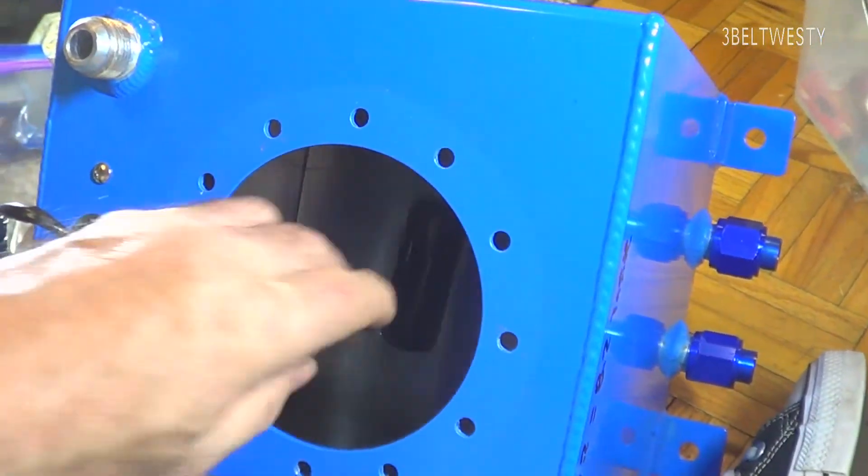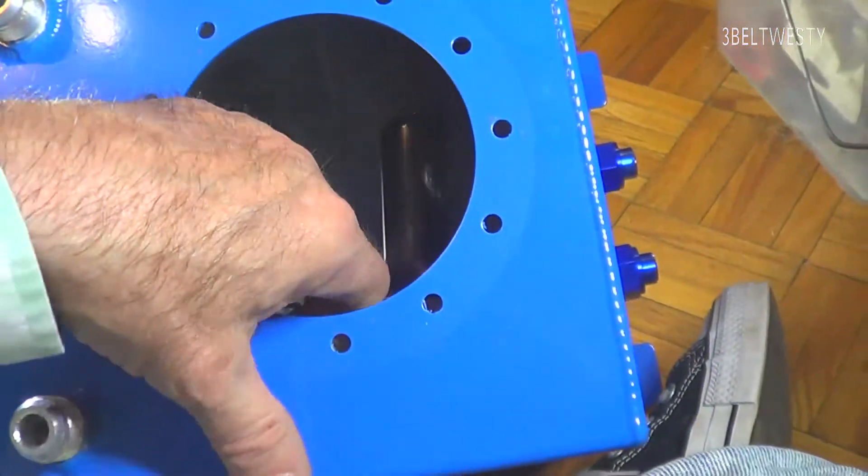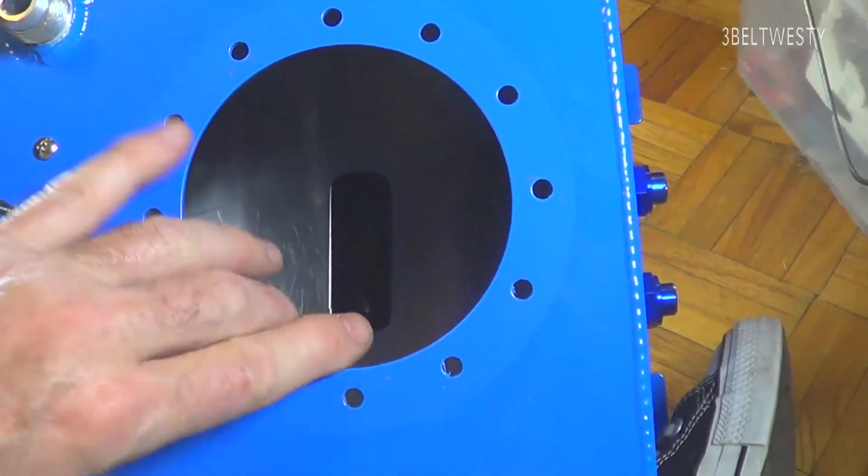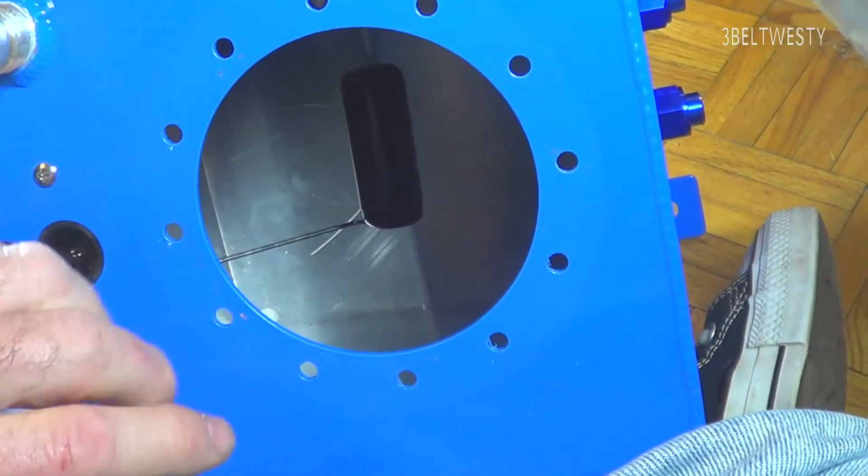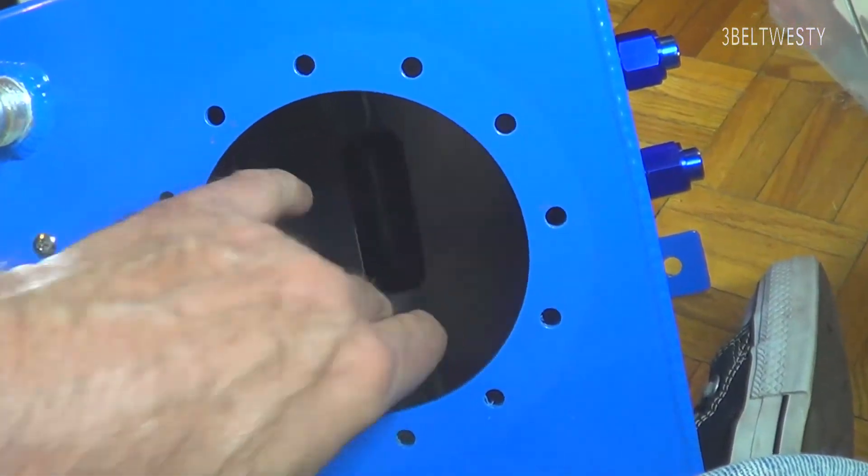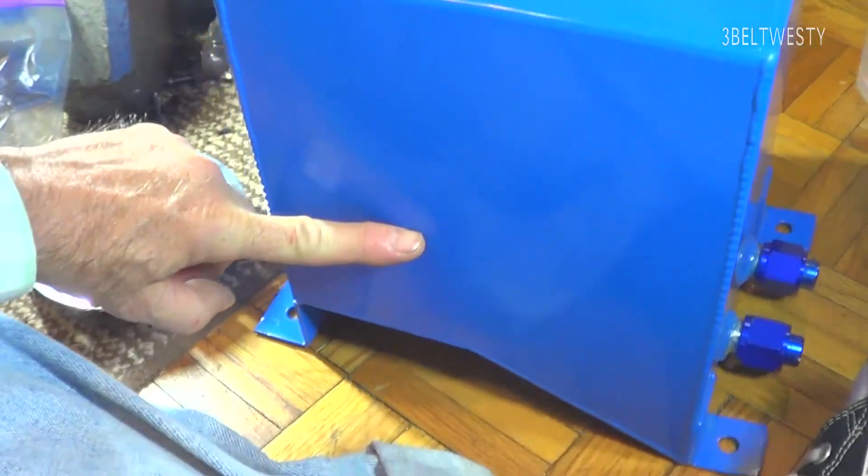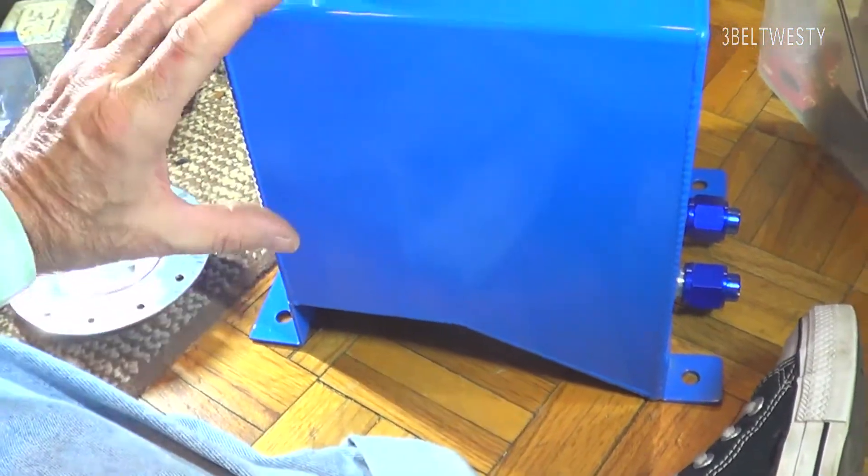So if you hook this up, this has got a 90-ohm sensor here, 90-ohm GM type. The float on here, when it's fully at the bottom, is going to be empty, but you've got an extra three inches of gasoline in here. It's got eight inches.